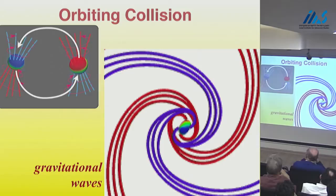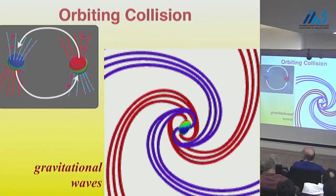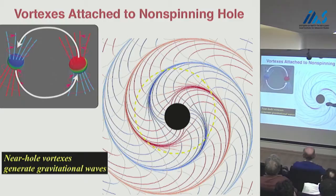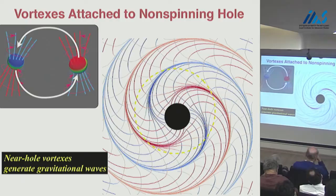There is a duality in the Riemann tensor in vacuum between tendex lines and vortex lines, between the electric (tidal) fields and the magnetic (frame-drag) fields. Everything I've described in terms of gravitational waves created by vortex lines attached to a source goes over to the same kind of process with tendex lines. The actual pattern for two merging black holes in the equatorial plane shows the red and blue vortex lines making an orthogonal pattern that becomes gravitational waves — from perturbation theory of a Schwarzschild black hole at late stages.